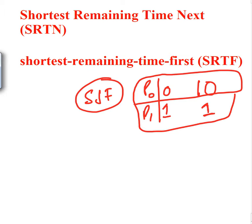For example, you start executing P0 and after one unit of time, nine units are left. Then P1 arrives with only one unit. We check: P0 has nine units remaining, P1 has one unit remaining. So the shortest remaining time is with P1 — we preempt P0 and load P1.